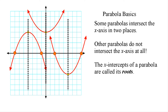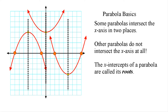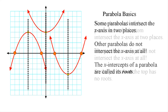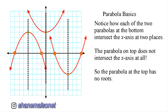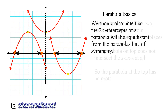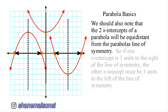Now, one thing you're going to notice about parabolas is sometimes they will intersect the x-axis in two places, and sometimes they will not intersect the x-axis whatsoever. These points that intersect the x-axis are called the roots of a parabola. So if you take a look at the two parabolas located at the bottom, you will notice that each one of them intersect the x-axis at two places, so we would say that each one of those parabolas have roots. If you take a look at the parabola at the top, notice that it does not intersect the x-axis in any place, therefore we would say that that parabola does not have any roots. And if we take a look at the roots of those two parabolas at the bottom, you will notice that each one of those roots are equidistant from each one of their lines of symmetry.